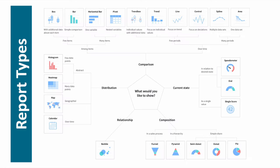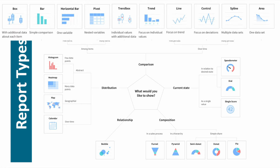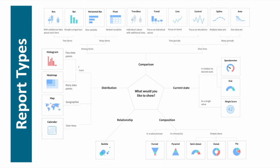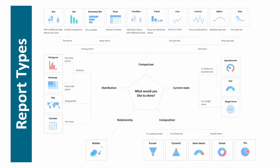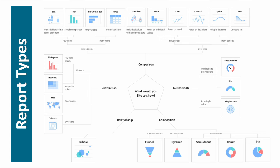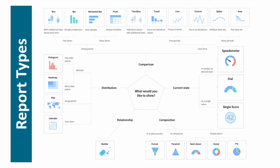ServiceNow provides over 23 different types of reports or visualizations out of the box. They include lists, box, bar, pivots, trends, line, control, spline, area, histogram, heat map, maps, calendars, bubble, funnel, pyramid, donuts, pie, speedometer, dial, and single score. Each of these might be useful depending upon your scenario, and I'll include a link in the description box to this diagram to help you explore and determine which report type might be best for your situation.